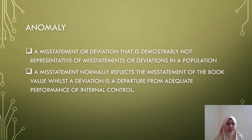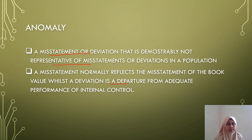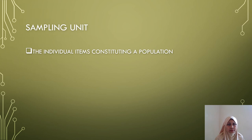Anomaly is a misstatement or deviation that is demonstrably not representative of misstatements or deviations in a population. A misstatement reflects the misstatement of the book value, whilst a deviation is a departure from adequate performance of internal control. Sampling unit refers to the individual items constituting a population.